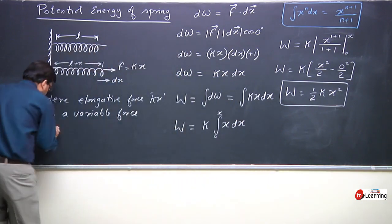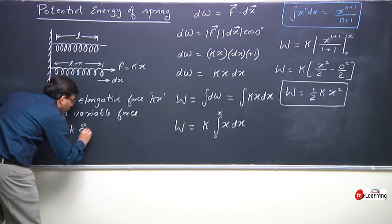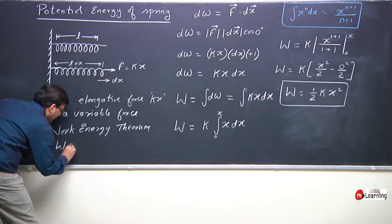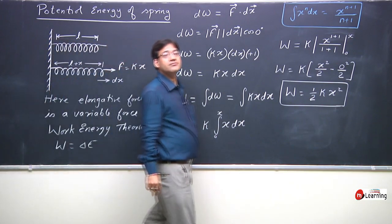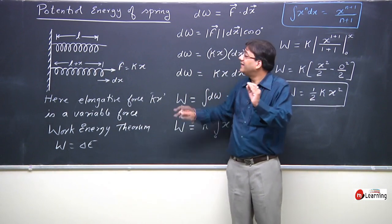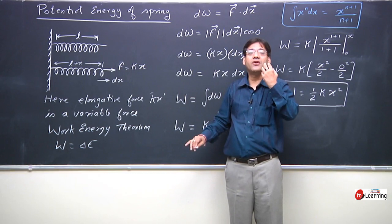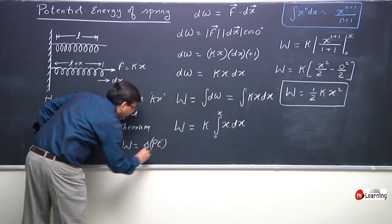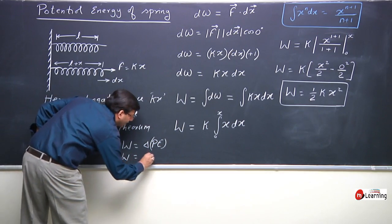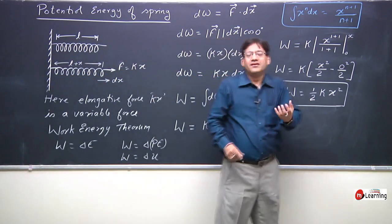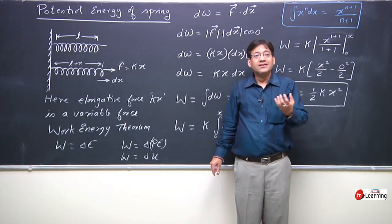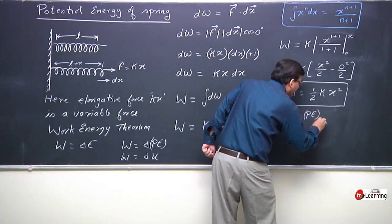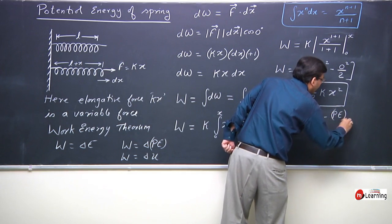Now by the work-energy theorem, work done equals change in energy. In this situation the change in energy is taking place in the form of potential energy. Hence, work done equals change in potential energy. Potential energy is sometimes denoted by U. Therefore, this work done equals final potential energy minus initial potential energy.